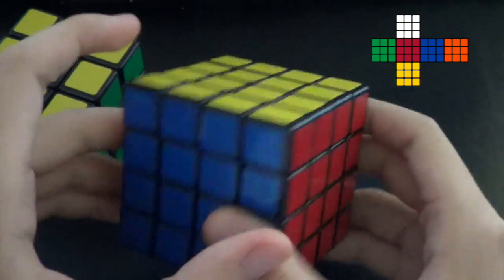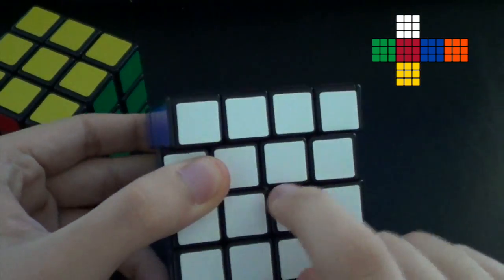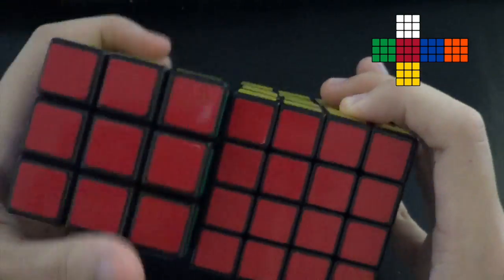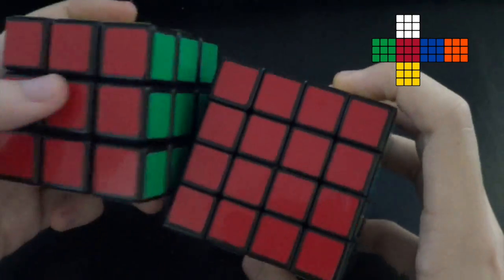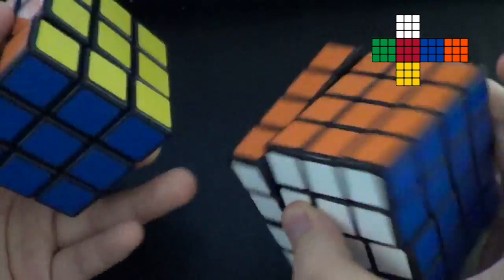Yellow's on top, blue is to the left of red, and yellow and white always across from each other. Same, and then red across from orange, green across from blue.